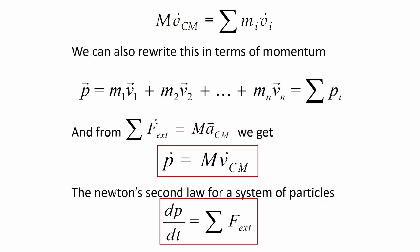We can also write an expression for momentum: rewriting the center-of-mass velocity expression and relating it to the momentum of a multi-body system — the sum of each mass times its corresponding velocity — and applying it to the expression for external force gives momentum in terms of center-of-mass velocity.